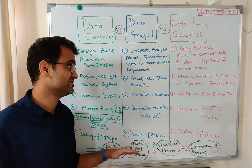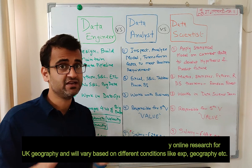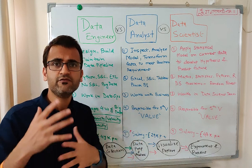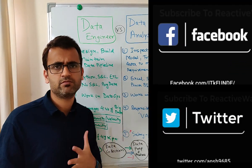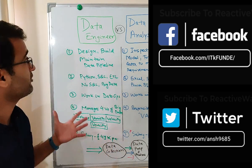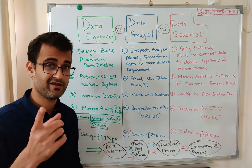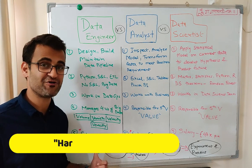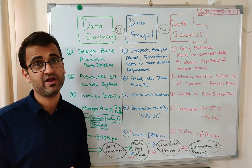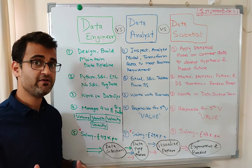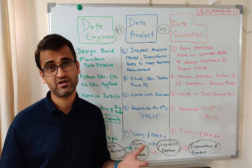Regarding salary — these are approximate figures from a reputed site, limited to UK geography and subject to change. Average annual salary for a data engineer is around £49K; for a data analyst it's £29–30K; and for a data scientist it's close to £48K. The data engineer, who does the toughest and dirtiest job, commands a very strong package from the market.